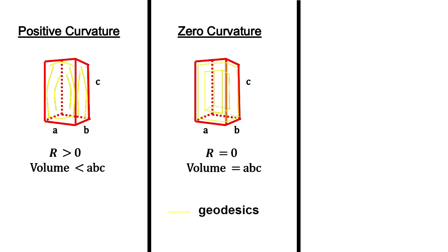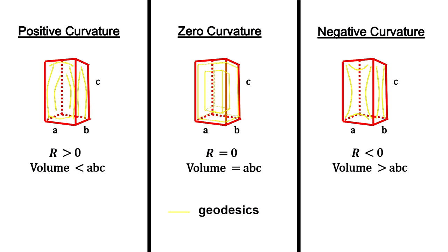The volume is less than this if the Ricci curvature in the interior region is positive. In other words, it's smaller on the inside. The volume is more than this if the Ricci curvature of the interior region is negative. In other words, it's larger on the inside.